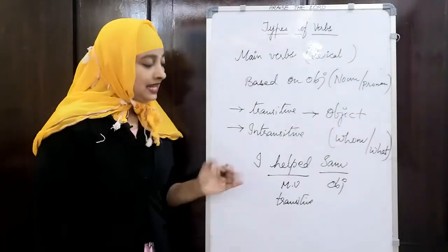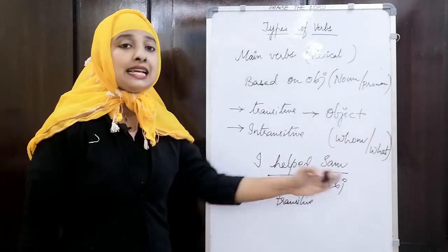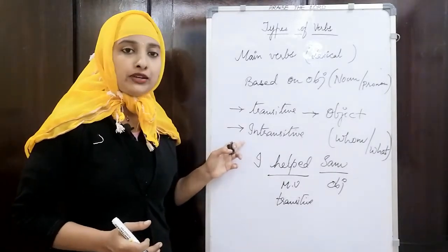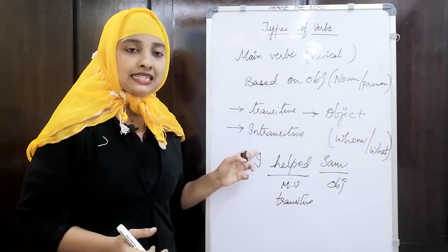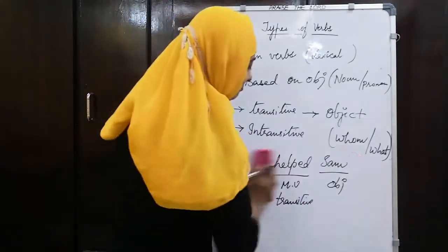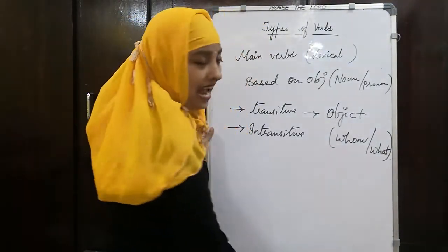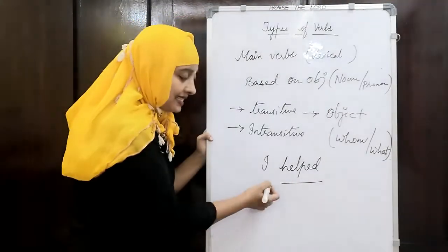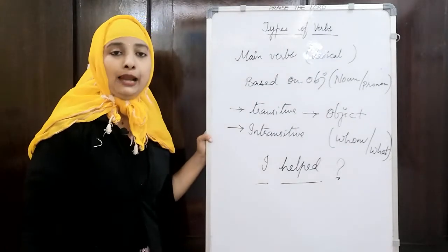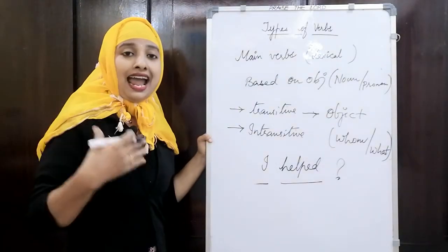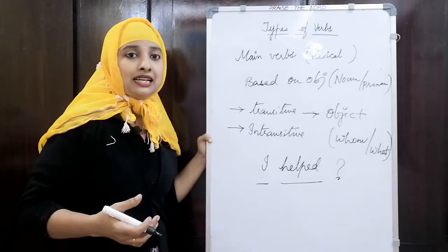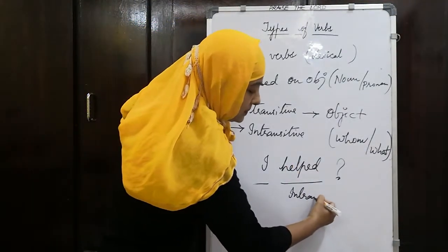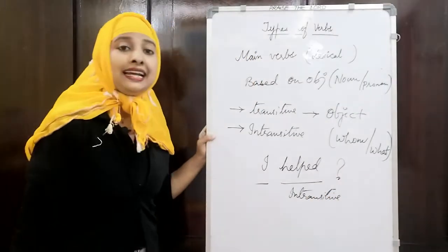Suppose there is no object — if it is not transferring anything to an object, then the opposite of transitive is intransitive. With an intransitive verb, you won't find any object. Instead of 'I helped Sam,' if I say 'I helped' — there is still a verb and a subject, but no object. Examples: 'I helped,' 'They jumped,' 'He swam' — all these are intransitive verbs.